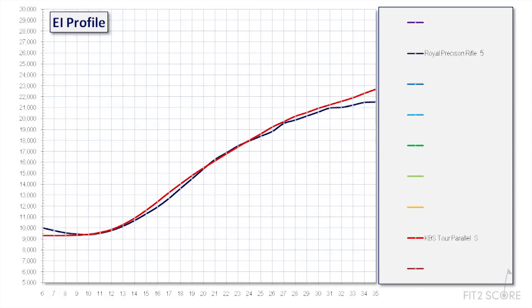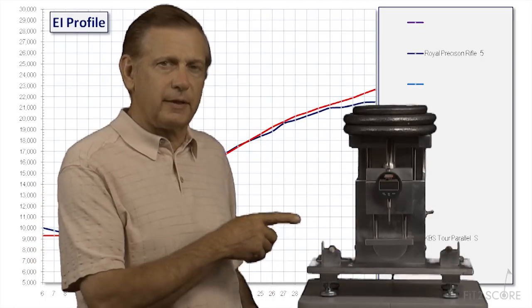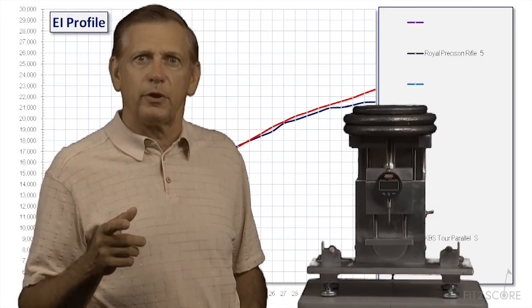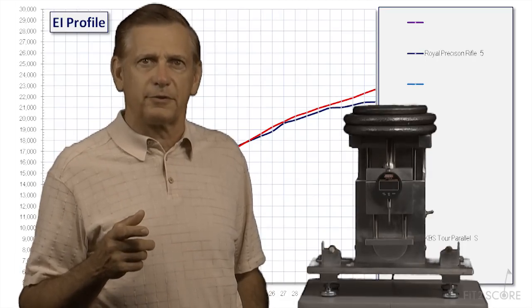Here's another comparison. The Royal Precision 5.0 rifle compared to the KBS tour parallel. Virtually the same shaft. Little surprise actually, they were both designed by Kim Braley. Aha! This instrument made it clear to the Fit2Score affiliates that experience with the Royal Precision rifle shafts will transfer directly to the KBS tour parallel.